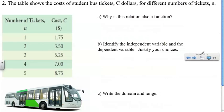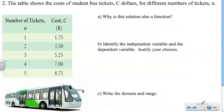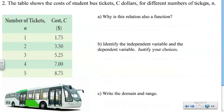Pause the video here. I want you to try this one. This table is showing the cost of student bus tickets C in dollars for different numbers of tickets, which is represented by N. Pause the video here, give this a try and answer these three questions, then come back and we'll go through them together.